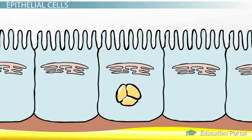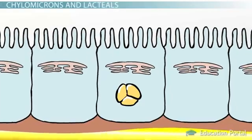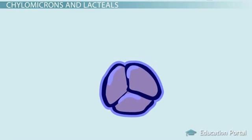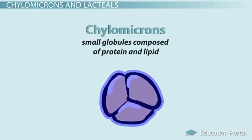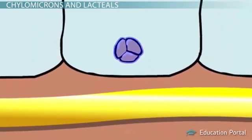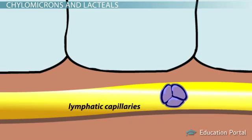An important fact is that fats are reassembled in the epithelial cells of the small intestine, which makes fat absorption different from absorption of proteins and carbohydrates. With protein and carbohydrate absorption, their basic units — amino acids and monosaccharides — are able to pass through the intestinal epithelial cells without being altered. Before the triglycerides leave the epithelial cells, they are coated by protein, which results in the formation of chylomicrons — small globules composed of protein and lipid. This protein coating gives the triglyceride a water-soluble coat, allowing the chylomicron to travel outside of the cell.